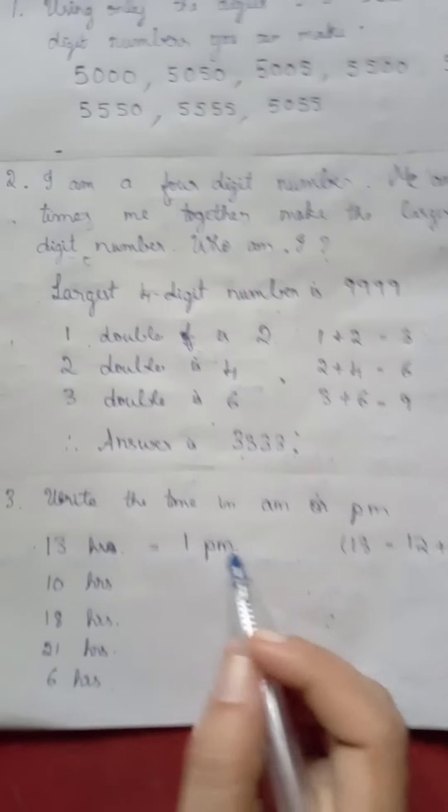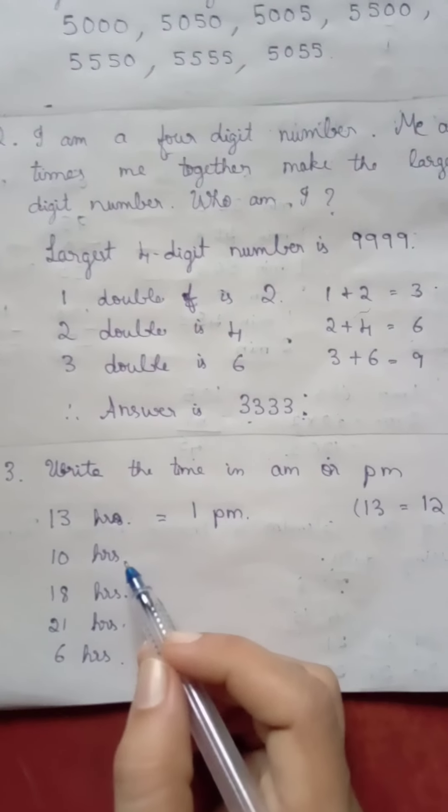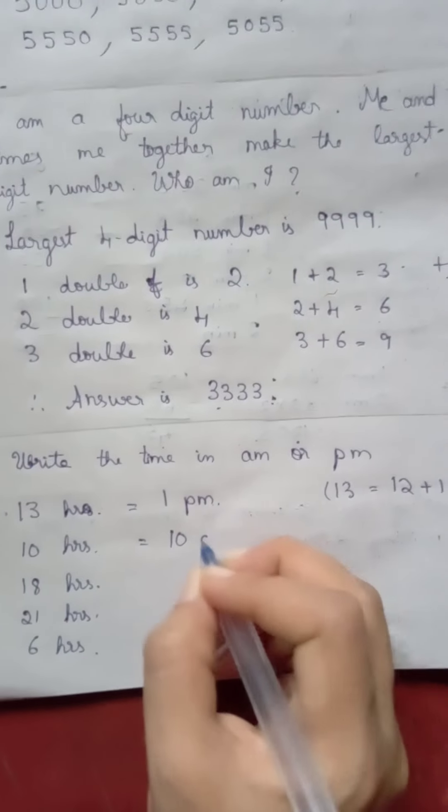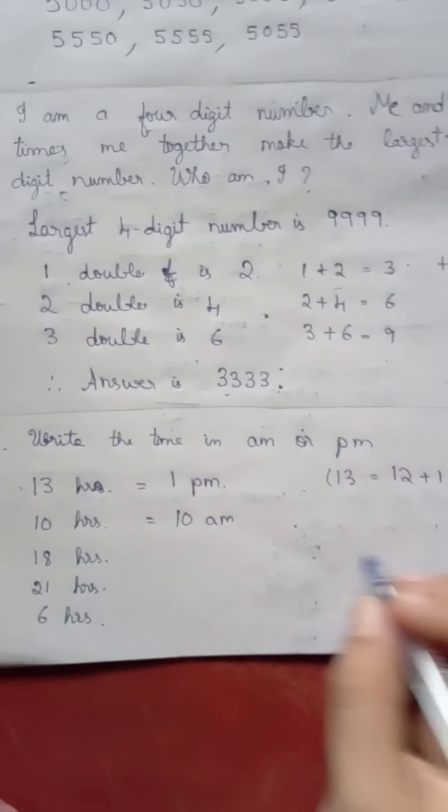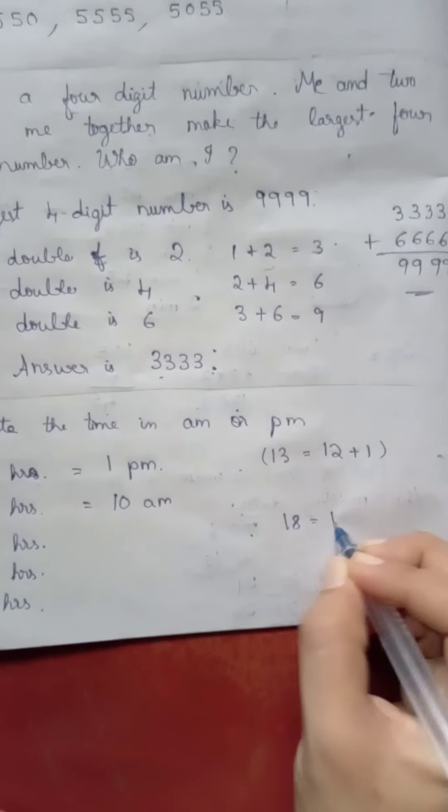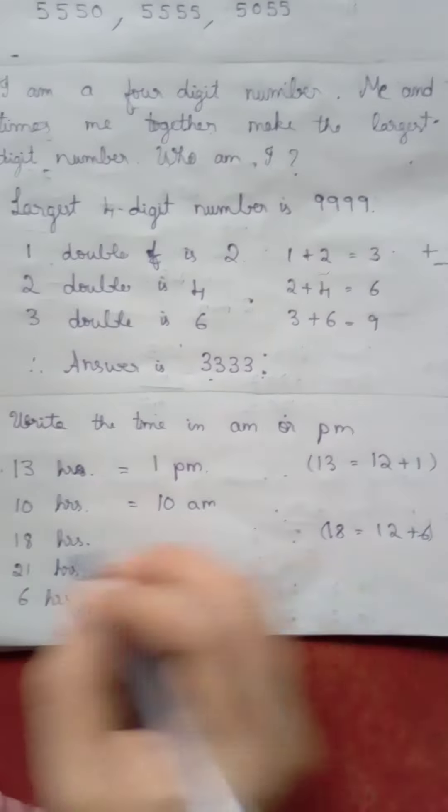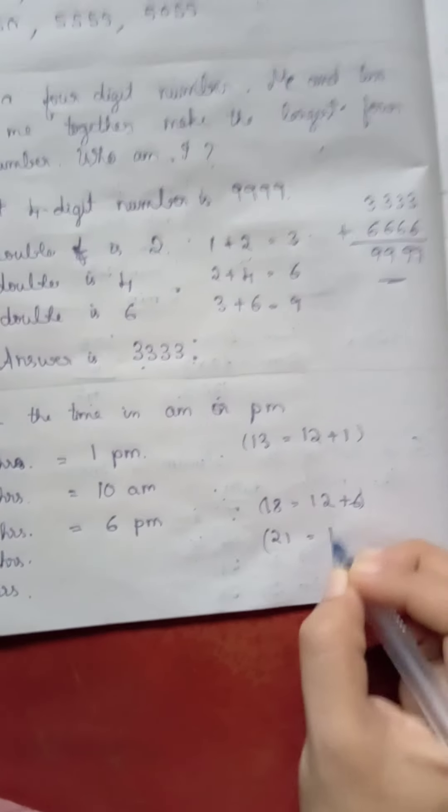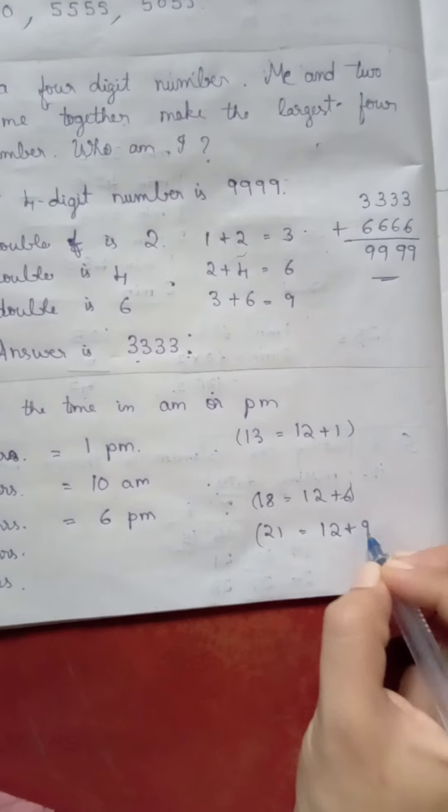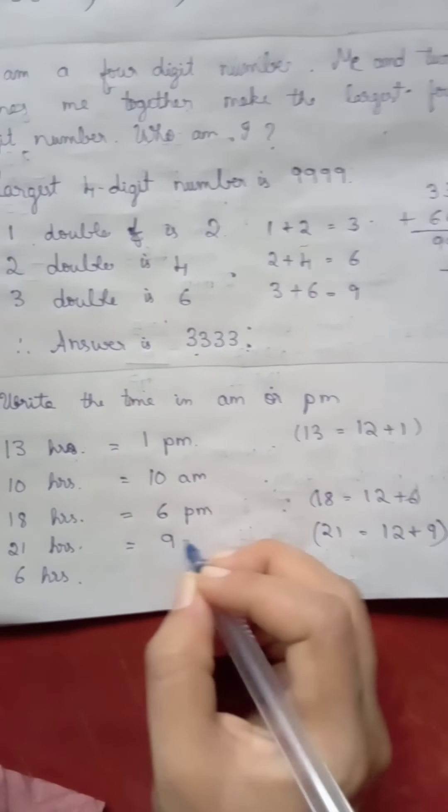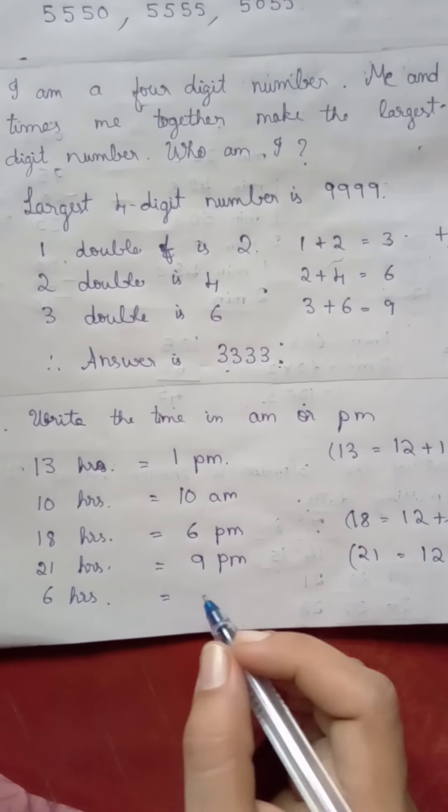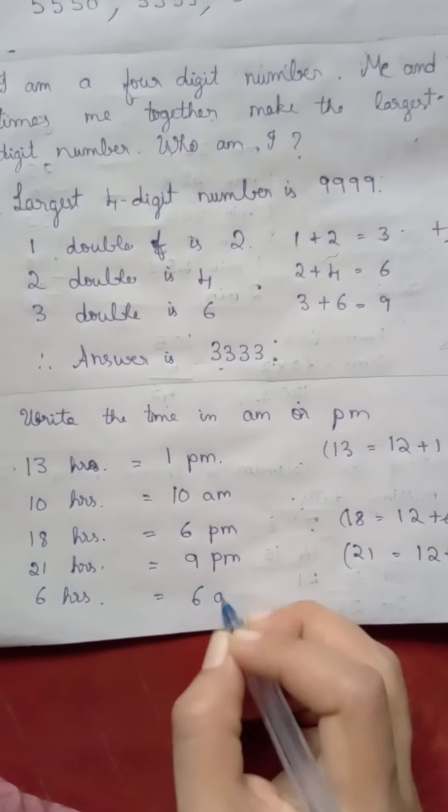10 hours comes before midday 12 o'clock, so it is 10 am. 18 hours, 18 is equal to 12 plus 6, therefore 18 hours is equal to 6 pm. 21 hours, 21 is equal to 12 plus 9, so 21 hours is equal to 9 pm. 6 hours comes in the morning before 12 o'clock, so it is 6 am.